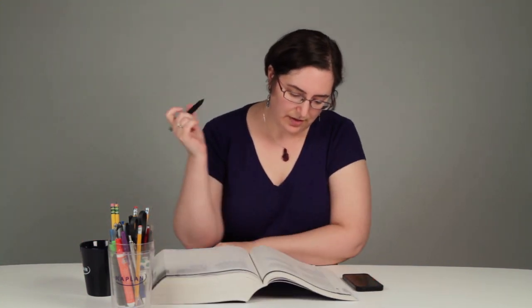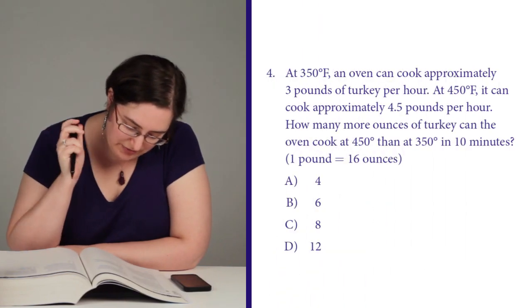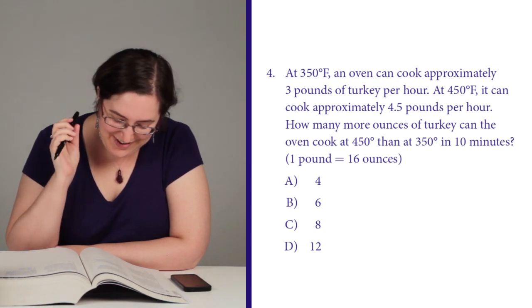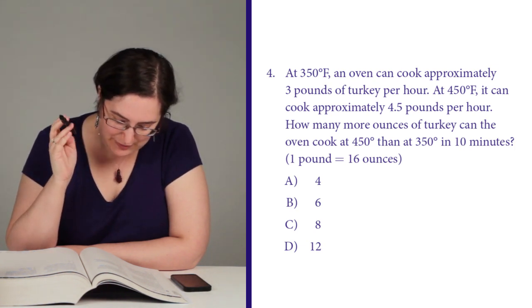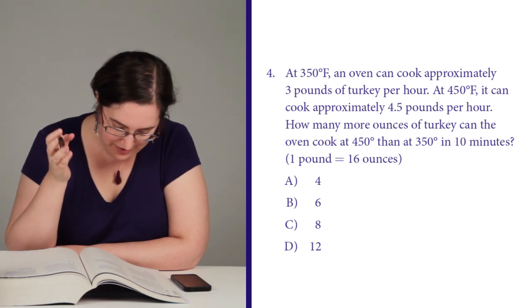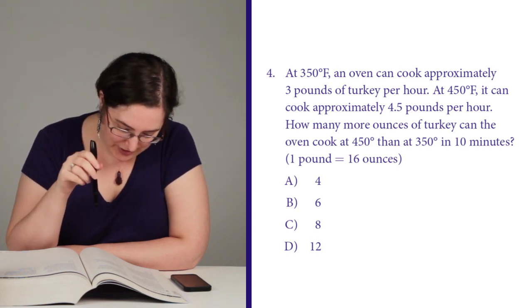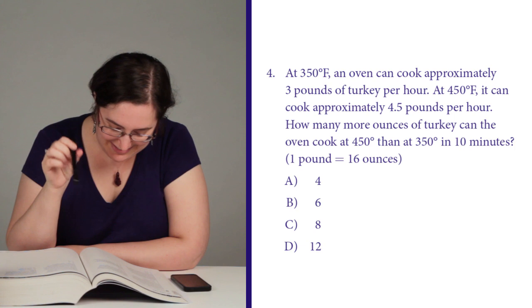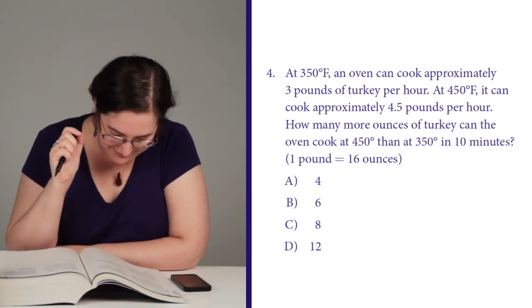Let's see what I'm doing next. Page 114, flipping back a little bit, question number four. At 350 degrees, an oven can cook approximately three pounds of turkey per hour. At 450 degrees, it can cook approximately 4.5 pounds per hour. How many more ounces of turkey can the oven cook at 450 degrees than at 350 degrees in 10 minutes? Lots of moving parts here — that happens a lot with rates and ratios types of problems.